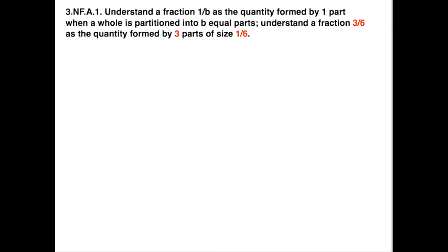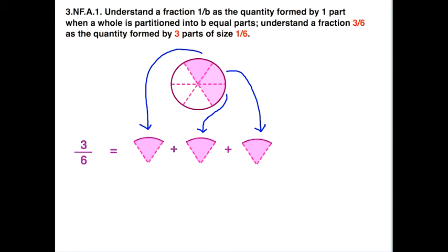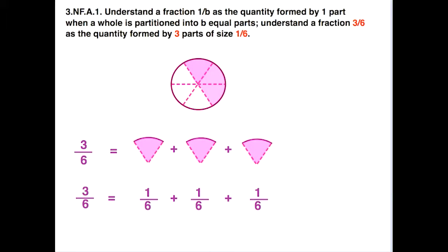Let's do another example — this time with three parts, again with a size of one-sixth. We shade in three parts. Just like before, before going to just numeric symbolism, let's use the actual pieces. Now we can use numeric symbols. Students will have a much better idea of what this looks like and how to connect the abstract with the concrete.